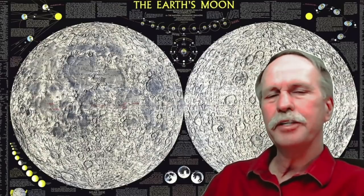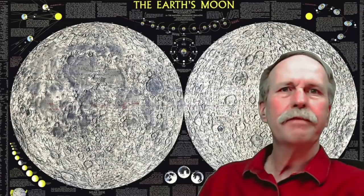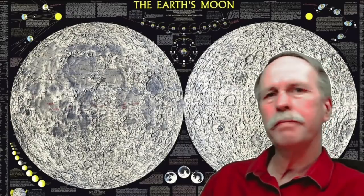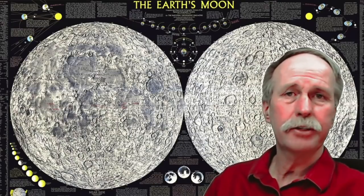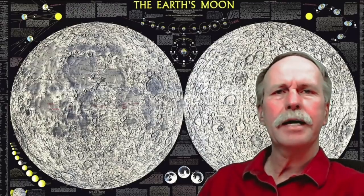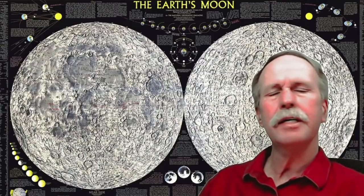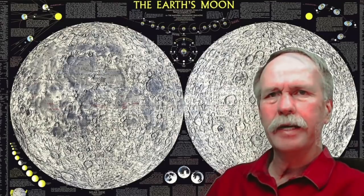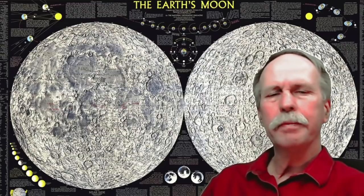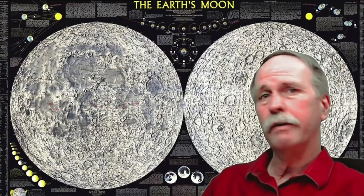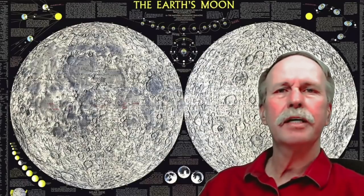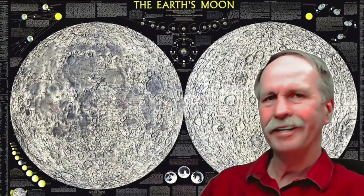Hi everyone, greetings from northern Michigan. This is Bob the Science Guy. We've got a lot of videos out there on the Coriolis effect in the debunker community, and everybody seems to be pretty comfortable with north and south deflections due to Coriolis. But a lot of people are asking me questions about east and west, so I thought I'd go over that today. It's because Apollo 11 gives us the answer when it comes to east and west Coriolis. Let's get going.